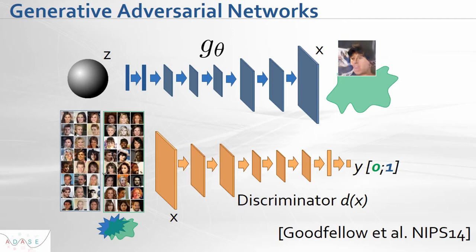The first one transforms latent space Z to an image. We denote this transformation by G sub theta. Another transformation works as a discriminator — it classifies whether the image is artificial or real, transforming any image to the corresponding label. These two models compete with each other in order to get the highest possible accuracy.